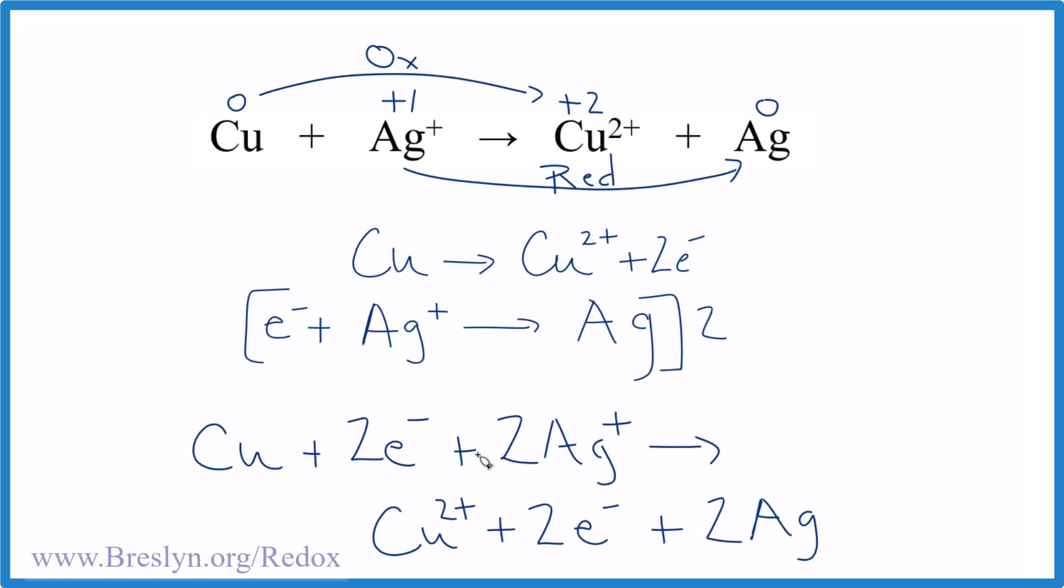And this is the balanced redox reaction for Cu plus Ag⁺. What we'll do is cancel out things that are the same on both sides. Those electrons. Let's get rid of those. Then we'll clean this up.